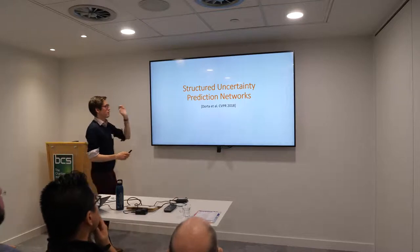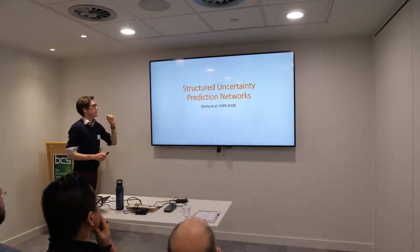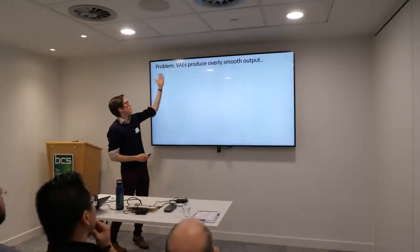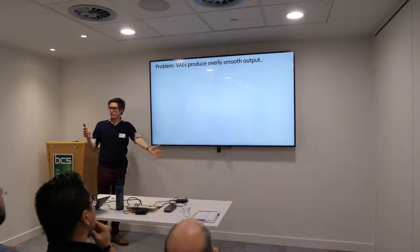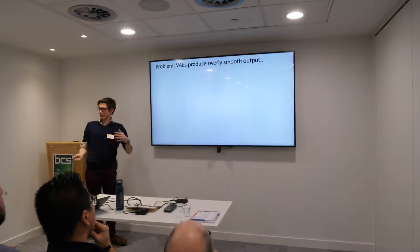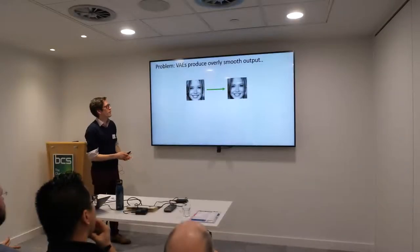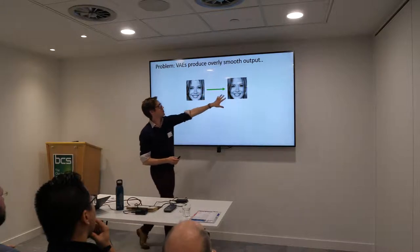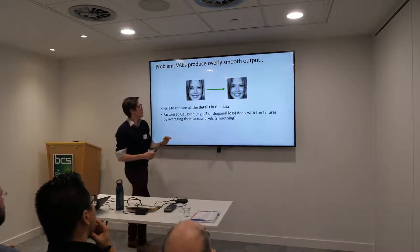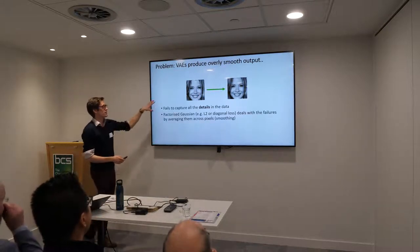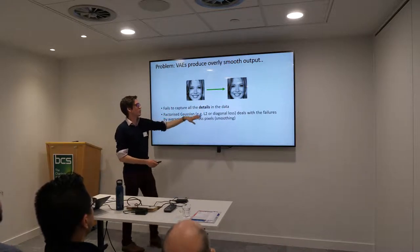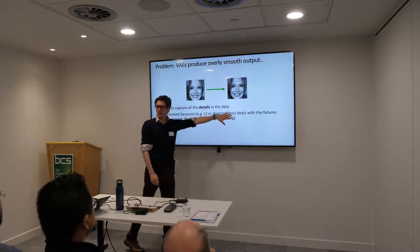So this is the first piece of work: Structured Uncertainty Prediction Networks. Our goal is that we like variational autoencoders because they capture the distribution, but you don't get nice samples out. We also estimate a per-pixel variance — a diagonal loss function.